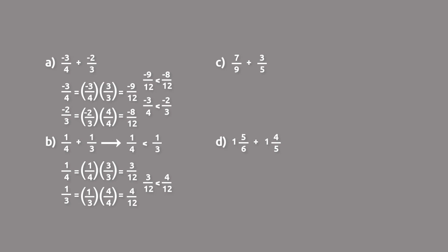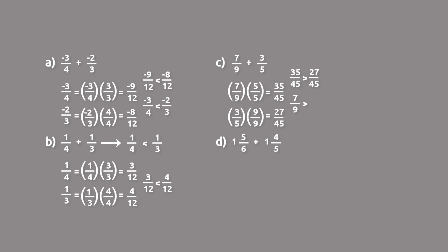For part C, we have 7 ninths and 3 fifths. What is the least common multiple of 9 and 5? That's 45 — we multiply them together. So 7 ninths times 5 over 5 equals 35 forty-fifths, and 3 fifths times 9 over 9 equals 27 forty-fifths. Since 35 forty-fifths is greater than 27 forty-fifths, we know that 7 ninths is greater than 3 fifths.